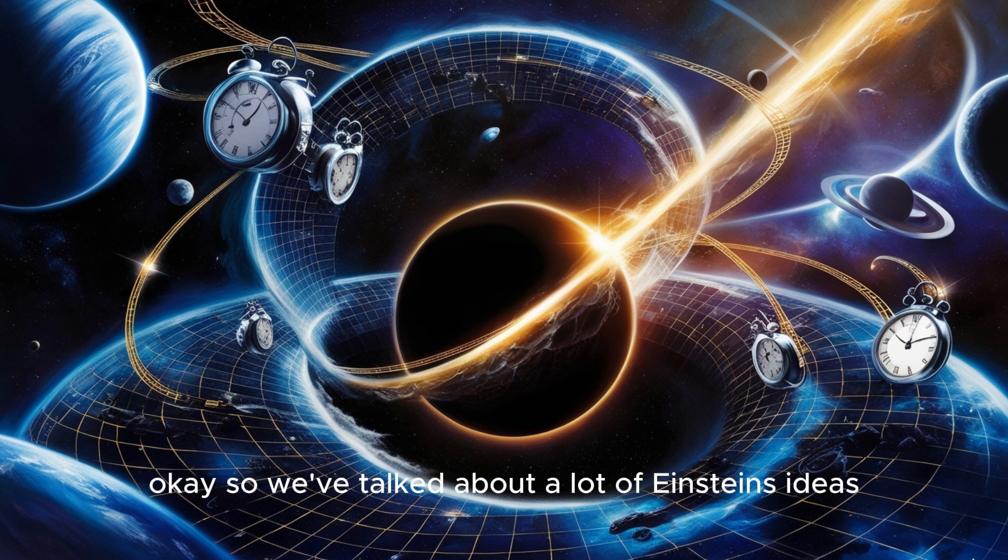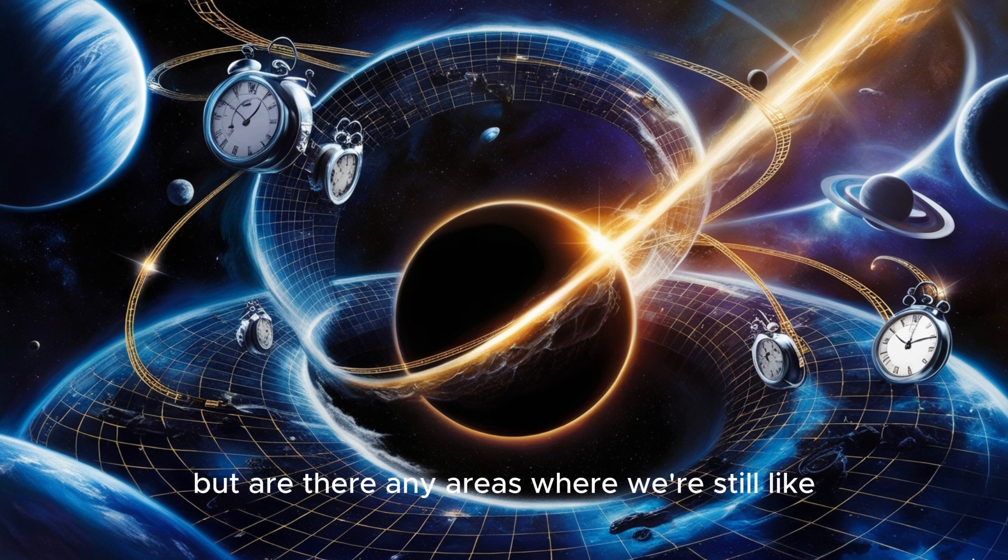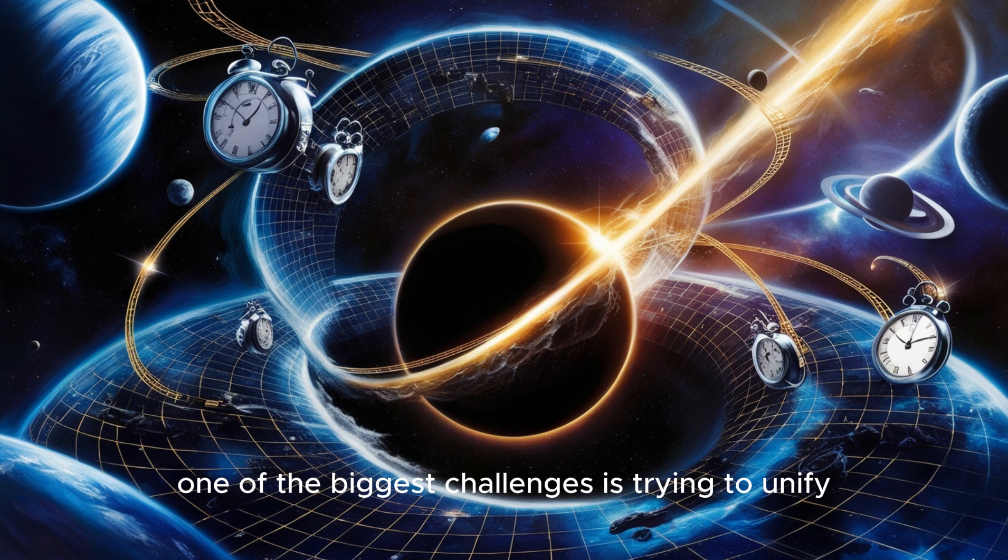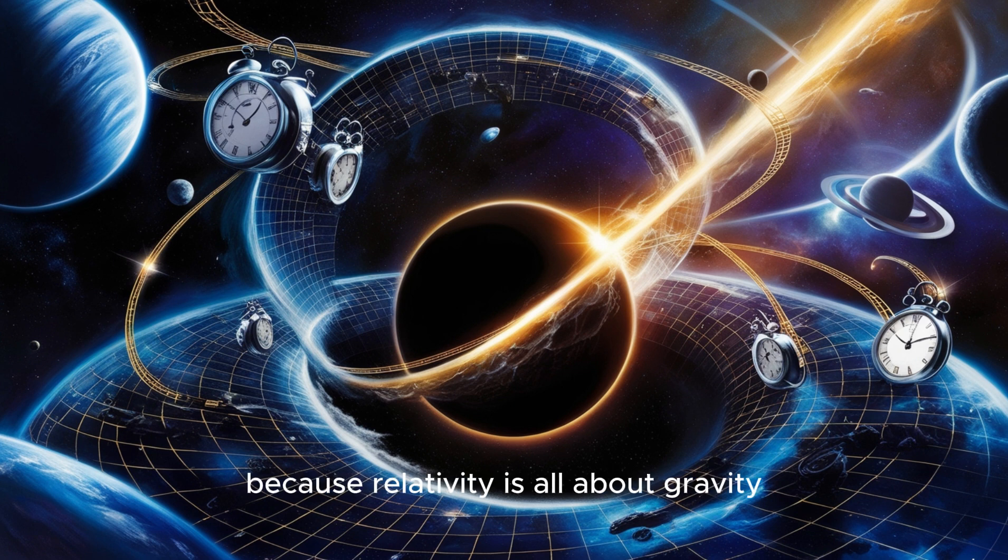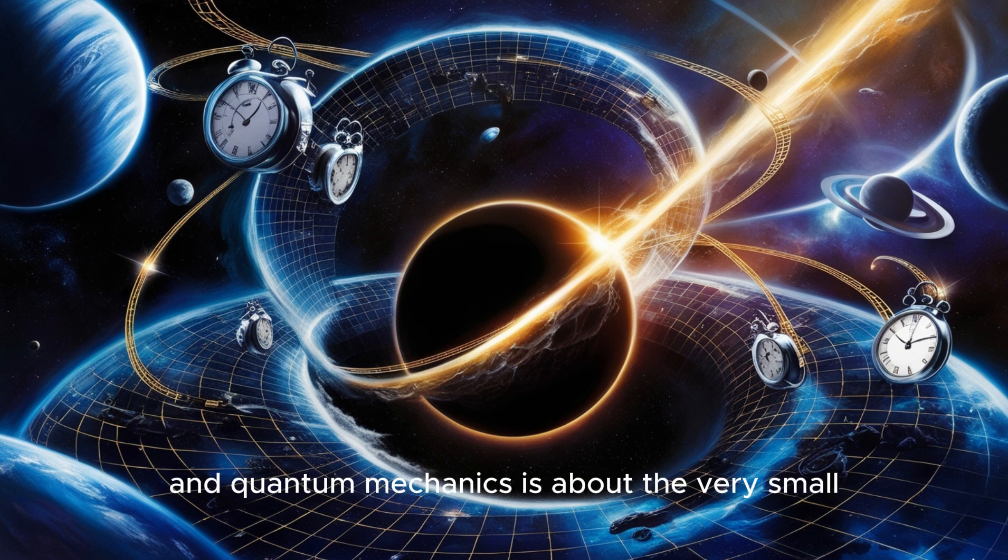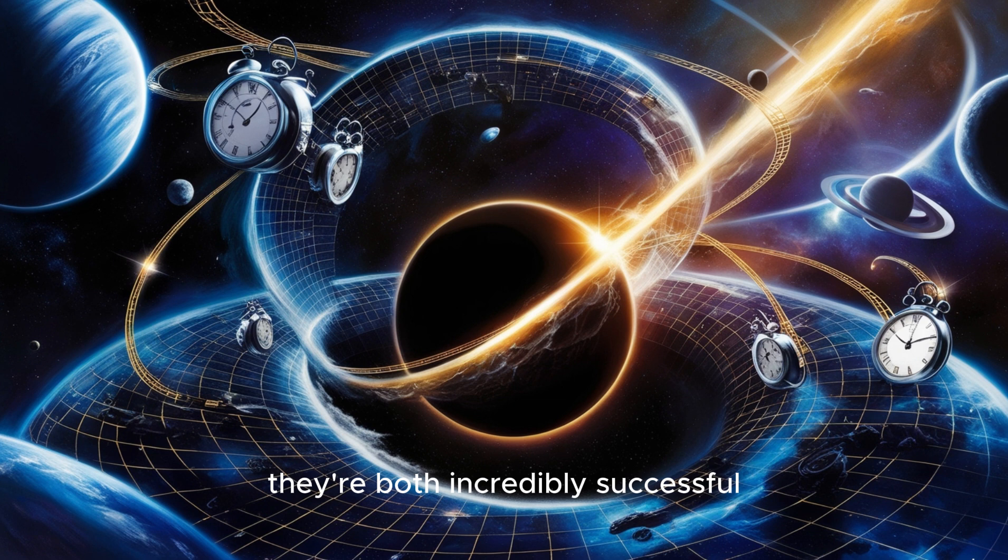It's exciting to think about what we might discover. So we've talked about a lot of Einstein's ideas, but are there any areas where we're still scratching our heads? Oh, absolutely. One of the biggest challenges is trying to unify Einstein's theory of general relativity with quantum mechanics. Because relativity is all about gravity and the large-scale structure of the universe: stars, galaxies, black holes. And quantum mechanics is about the very small, like the subatomic world of particles and forces. Exactly. And these two theories, they're both incredibly successful, but they seem fundamentally incompatible. So finding a way to combine them, to create a theory of everything, that's one of the biggest goals of modern physics.